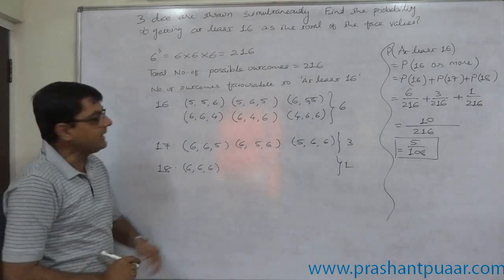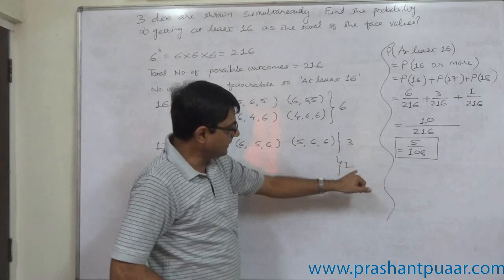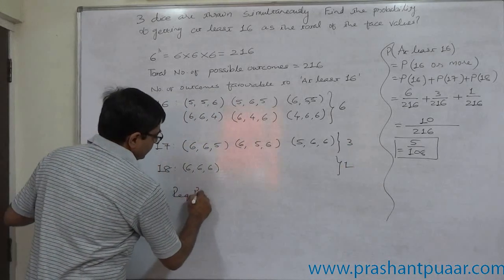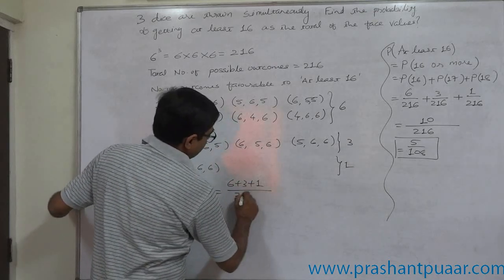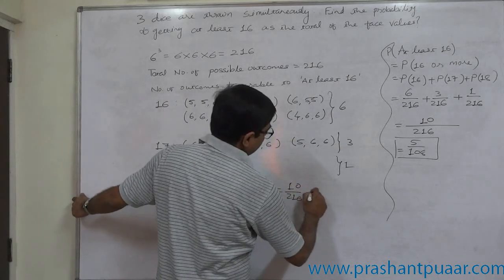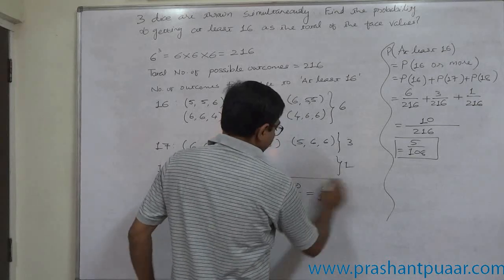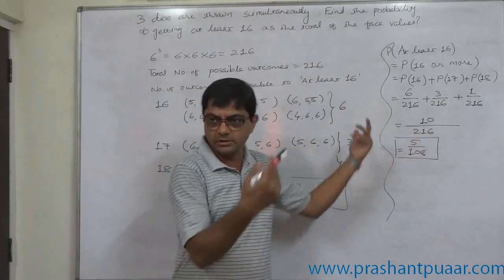Alternatively, the required probability equals (6 + 3 + 1)/216 = 10/216 = 5/108. The choice is yours—you can present your solution in either way.